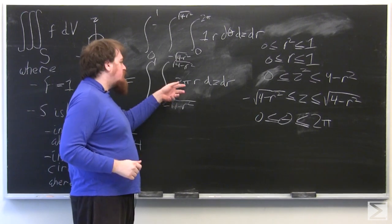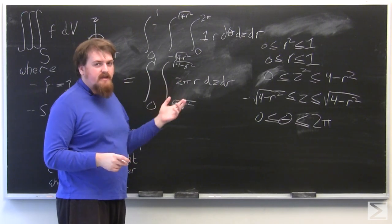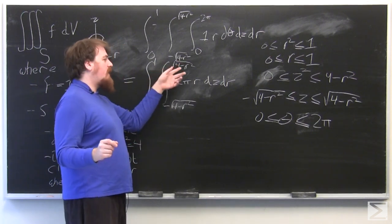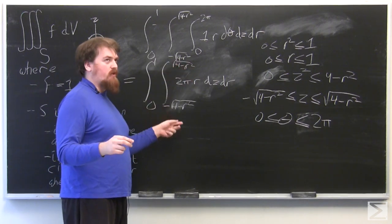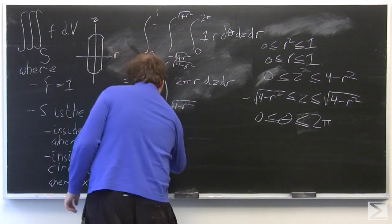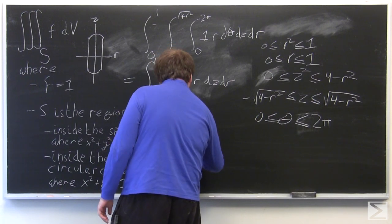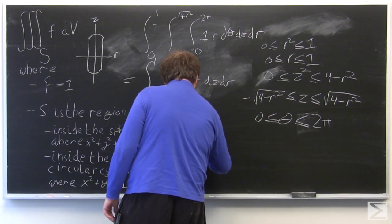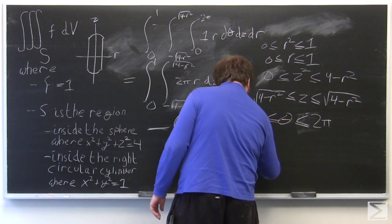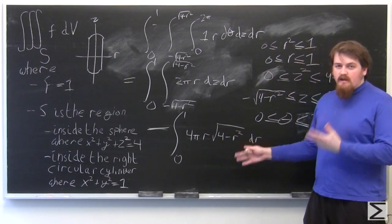We now have the double integral with the given limits of integration of 2π r dz dr. The integrand is also a constant with respect to z, so it becomes multiplied by z evaluated at the bounds: √(4 − r²) minus −√(4 − r²), which equals 2√(4 − r²). So after integrating with respect to z, we are left with the integral of 4π r √(4 − r²) dr from 0 to 1.